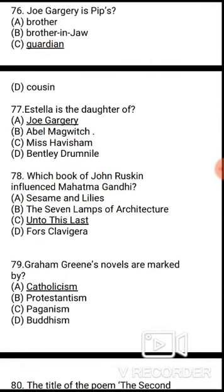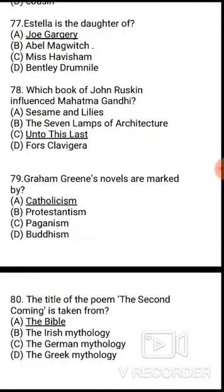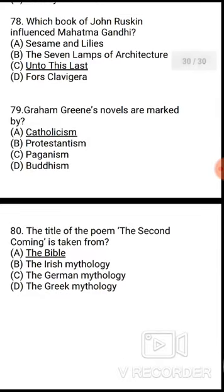Question 78: Which book of John Ruskin influenced Mahatma Gandhi? The correct answer is option C, Unto This Last. Question 79: Graham Greene's novels are marked by — the correct answer is option A, Catholicism. Question 80: The title of the poem 'The Second Coming' is taken from — the correct answer is A, the Bible.